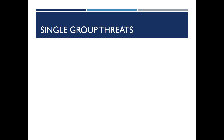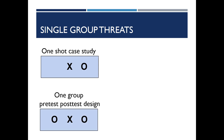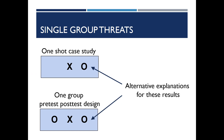Let's go over the single group threats first. If you remember, we had the one-shot case study and the one group pre-test post-test design. These threats are any other alternative explanation for the results at the post-test. Internal validity means the researcher wants to say it was the experimental group that led to the results, and now we'll go over some alternative explanations or threats to that claim.